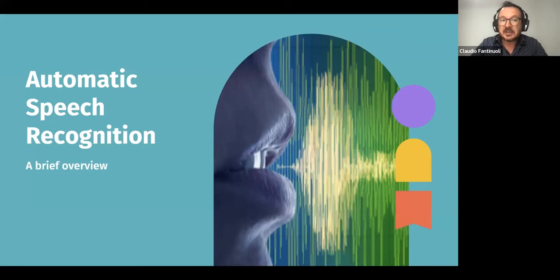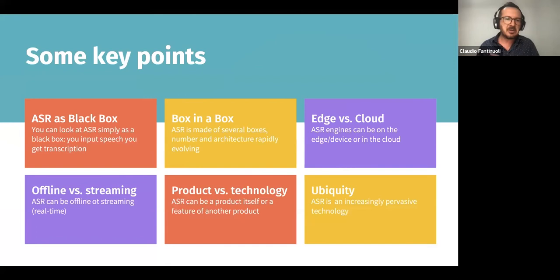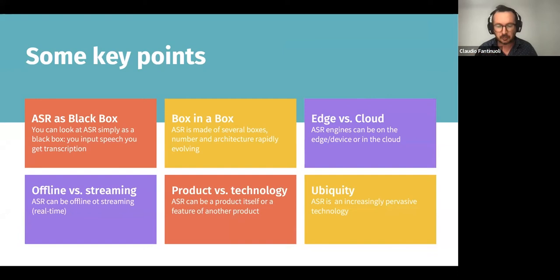Now, two minutes to understand speech recognition. I put here six boxes which are the key elements to take home, even if we are not experts in machine learning or artificial intelligence. We can consider speech recognition as a black box: you input audio and you get a transcription. Speech recognition is actually a box-in-the-box system — it is made of different components. It's not important what they are, but what is important is that these architectures, this way to solve the problem of transcribing, is changing all the time and becoming easier and easier to build.